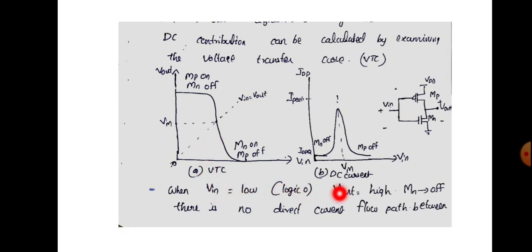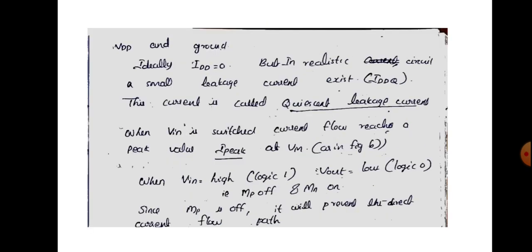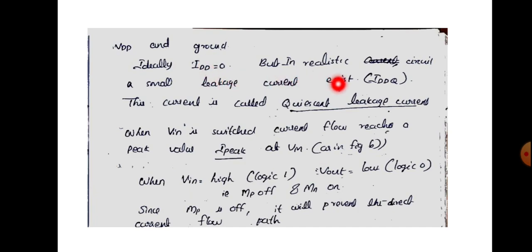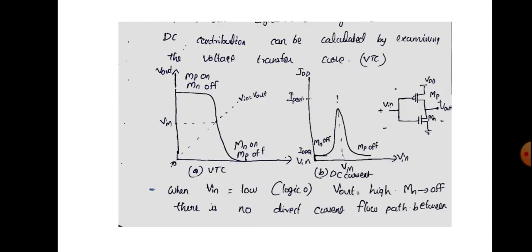When VIN is low, MP is on and MN is off. Since MN is off, the path from VDD to ground is blocked, so ideally IDD equals zero. But in a realistic circuit, a small leakage current exists, indicated by IDDQ, called the quiescent leakage current.